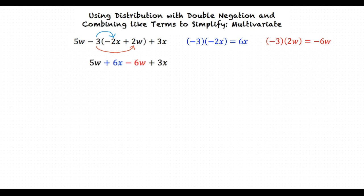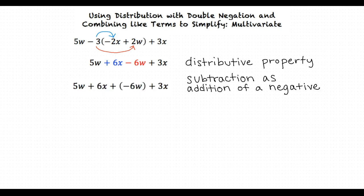So we are left with 5w plus 6x minus 6w plus 3x. Then we will write the subtraction as addition of a negative. To get like terms together we will use the commutative property to rearrange the terms.